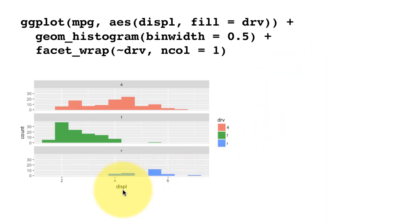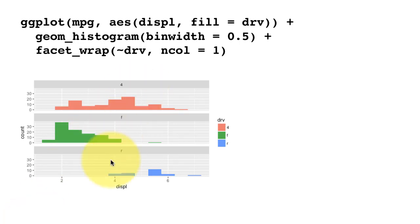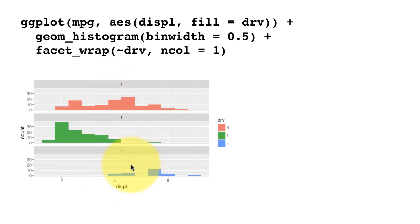This is a good illustration of how faceting by a secondary characteristic reveals interesting aspects of the data. Looking at the distribution of displacement, rear-wheel drive cars seem to generally have displacements in the higher end of the range, four-wheel drive has a good dispersion, and front-wheel drive cars tend to cluster on the lower side of displacement. This would obviously not have been evident if we had looked at just one histogram — this is why data analysis is sometimes called just a study of variation.